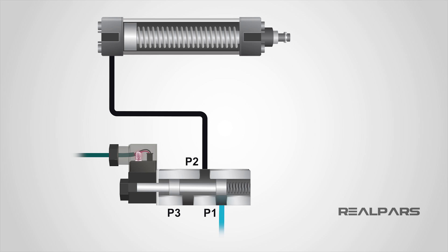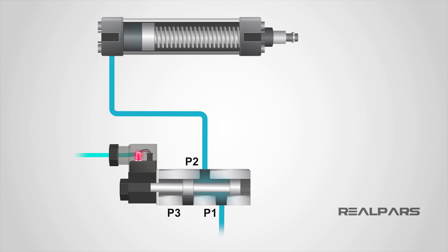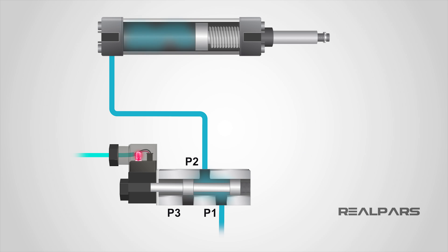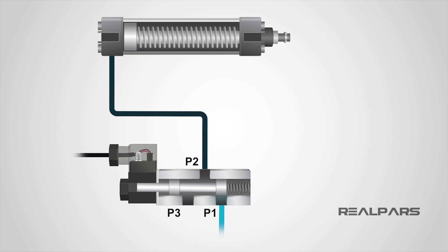Now imagine we operate the actuator. We would see the spool change position and the cylinder extend. This is because the spool has moved position, unblocking port 1 and simultaneously blocking port 3, resulting in allowing airflow from port 1 to port 2 while blocking the exhaust. This is known as our working position. The cylinder will remain extended until the spool is moved back to the normal position, either by way of another actuator at the opposite end of the valve, or by an internal spring return.